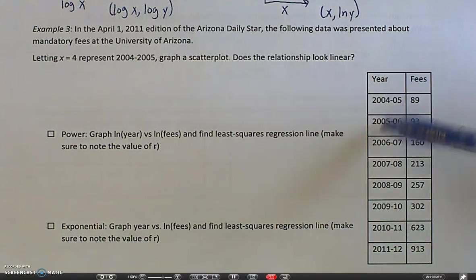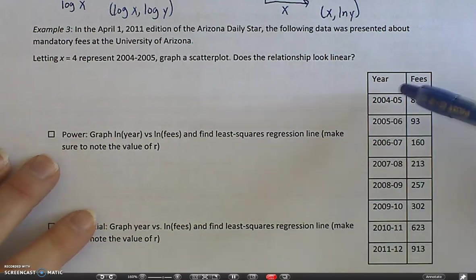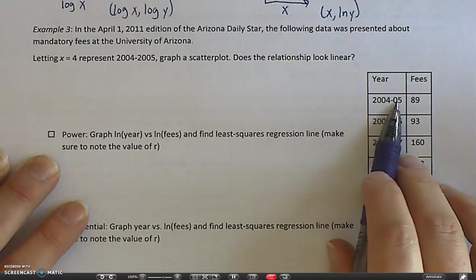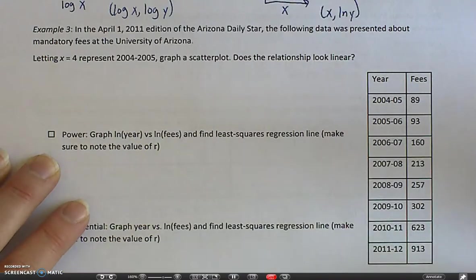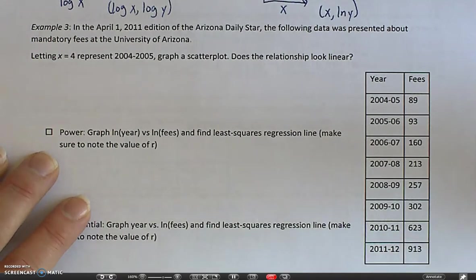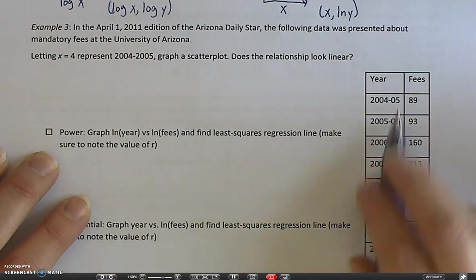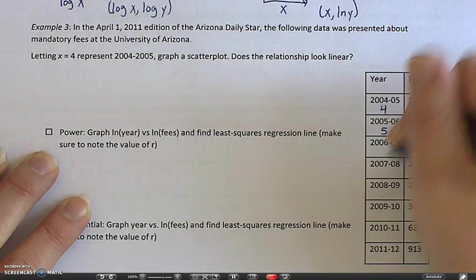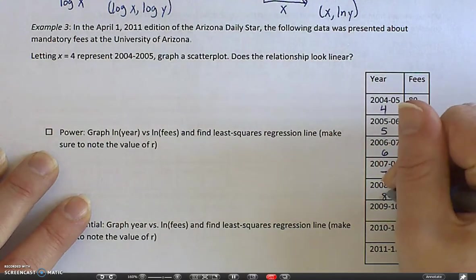So there's different years and different fees. If we let x equals 4 represent the 2004-2005 year, we want to graph a scatter plot and we want to see does the relationship look linear. So even though these are our years 2004-05, 2005-06, this is actually year, this is my value 4, 5, 6, 7, and so on.